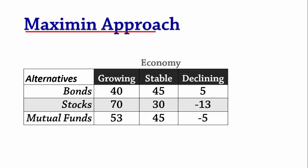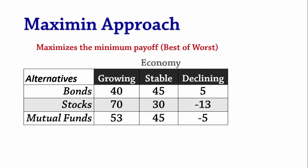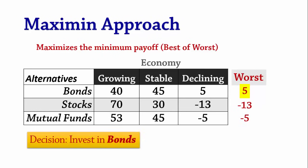The maximin or conservative approach. Using this pessimistic approach, we choose the alternative with the best of the worst payoffs. We first choose the worst payoff in each alternative, and then choose the best of the worst. Looking at bonds, the worst payoff is 5; the worst is minus 13 for stocks; and the worst is minus 5 for mutual funds. The best of these is 5.